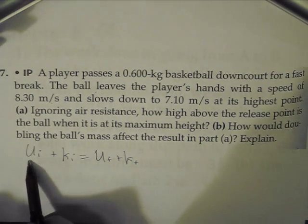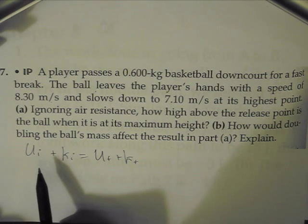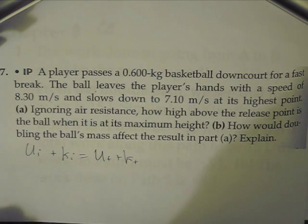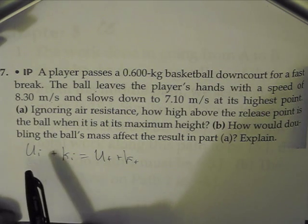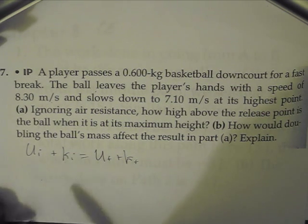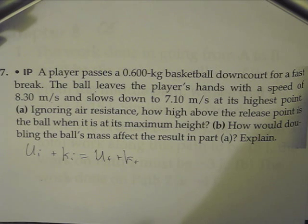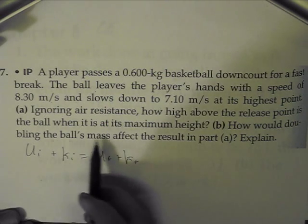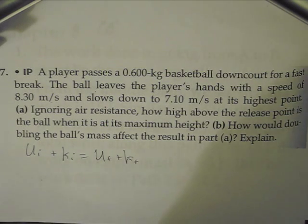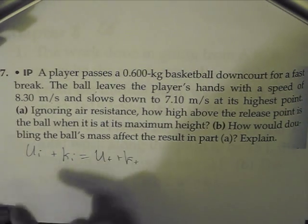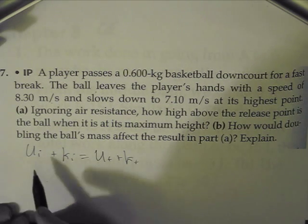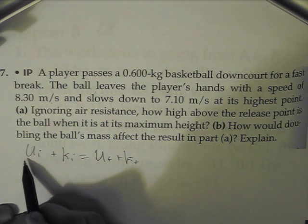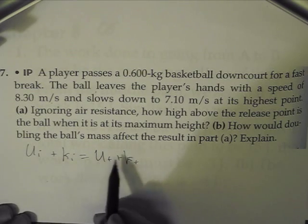U is going to be potential energy, so we know that that's mass times gravity times height, or instead of saying height you can say y. I choose to do y, but it doesn't matter, so mgy. And then kinetic energy is one-half times mass times velocity squared. So it's going to be the same for both sides, but if we do it right now then we're not going to solve for anything. First we need to find which of these we actually have.